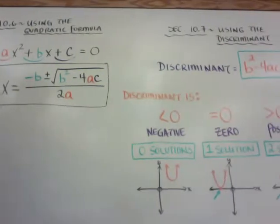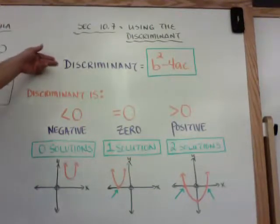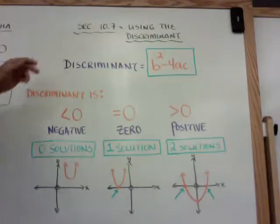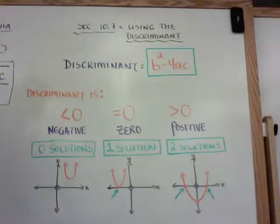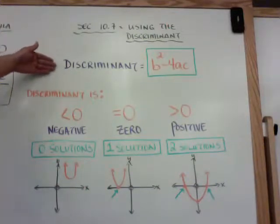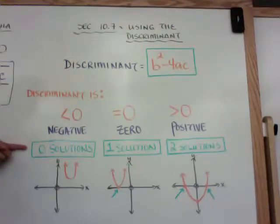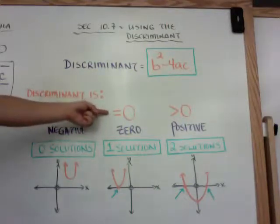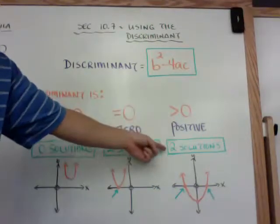The discriminant is b squared minus 4ac — that's what's under the radical, but you don't take the square root. All you do is compute b squared minus 4ac. The book will ask you how many solutions a quadratic equation has, and you use the discriminant to find out. Put it into standard form: if your discriminant is less than zero (negative), you have no solutions; if it's zero, you have one solution; and if it's greater than zero (positive), you have two solutions.